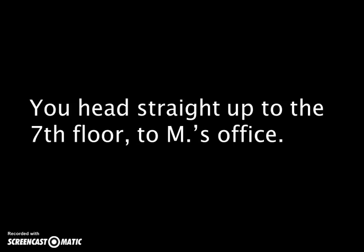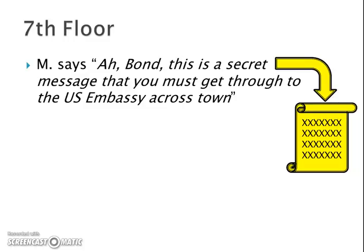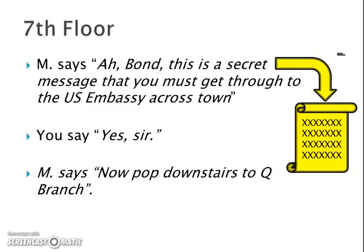We'll head straight up to M's office on the 7th floor. You knock on the door and M says come in. This is M — he's your boss, he can be grumpy. He tells you: this is a secret message that you must get through to the US Embassy across town. Now pop downstairs to Q Branch.